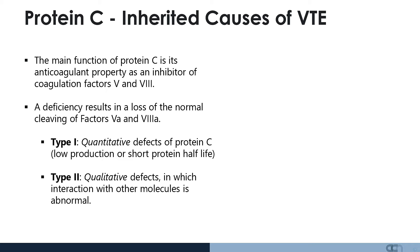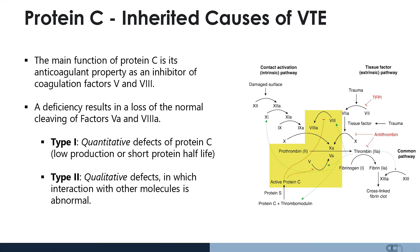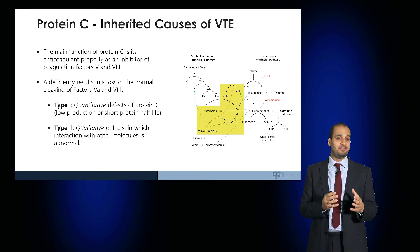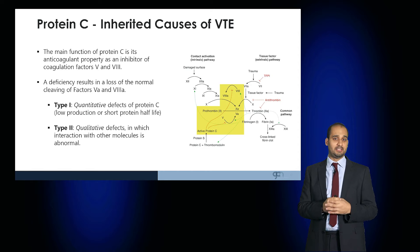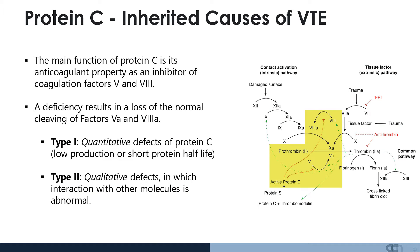Protein C: the main function of protein C is its anticoagulant property as an inhibitor of coagulation factors V and VIII. A deficiency results in the loss of the normal cleavage of factors V and VIII. There are two types: type I protein C deficiency and type II.